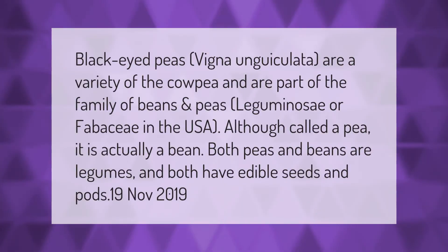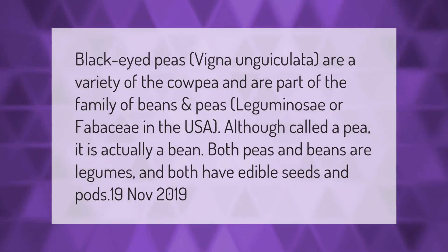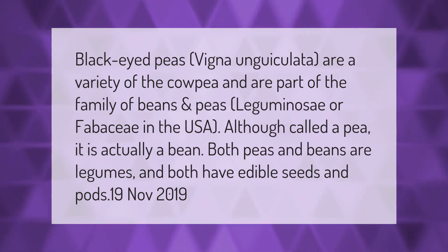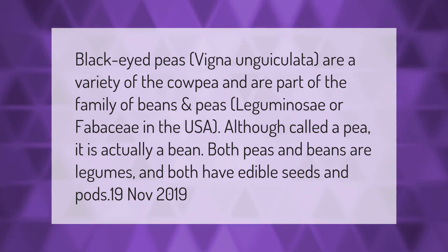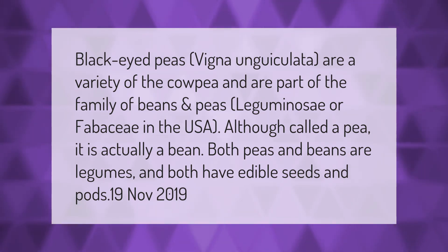Black-eyed peas (Vigna unguiculata) are a variety of the cowpea and are part of the family of beans and peas, Leguminosae or Fabaceae. In the USA, although called a pea, it is actually a bean. Both peas and beans are legumes, and both have edible seeds and pods.